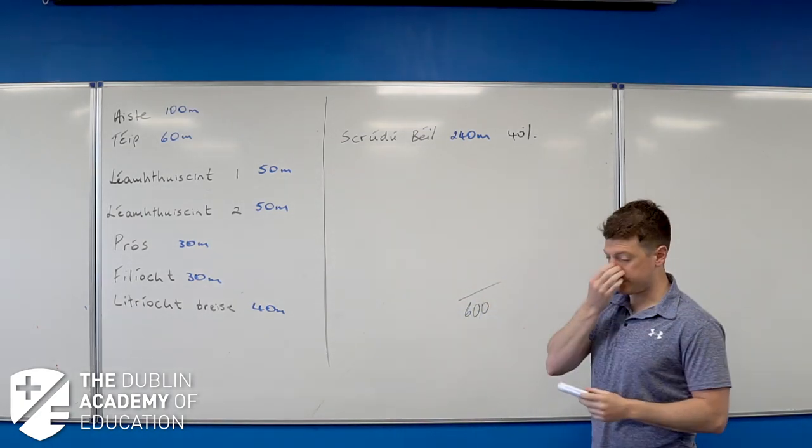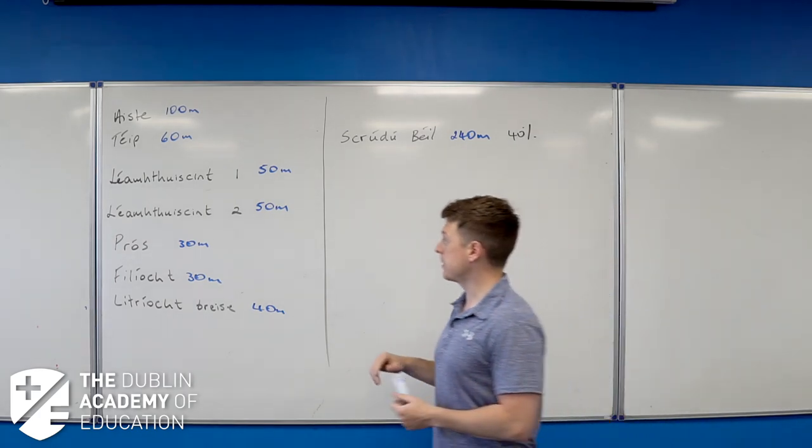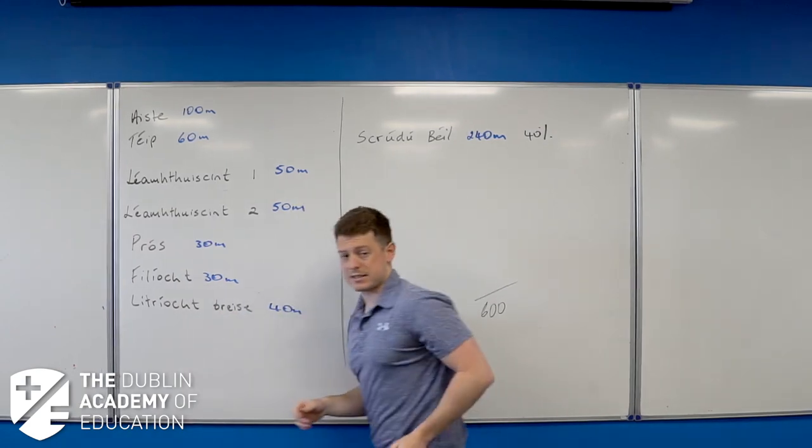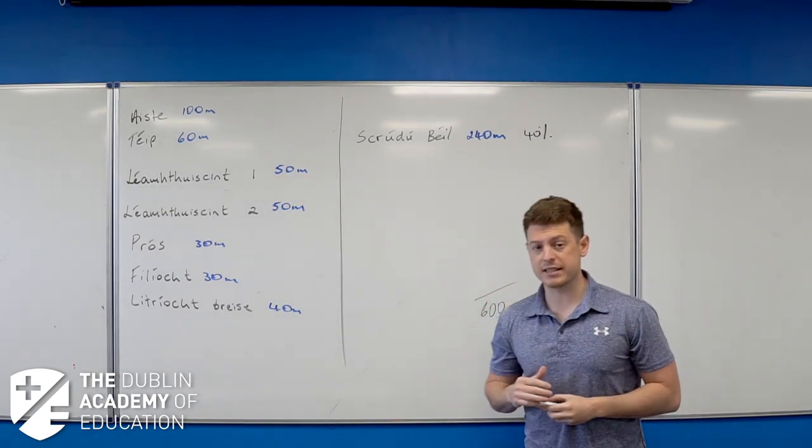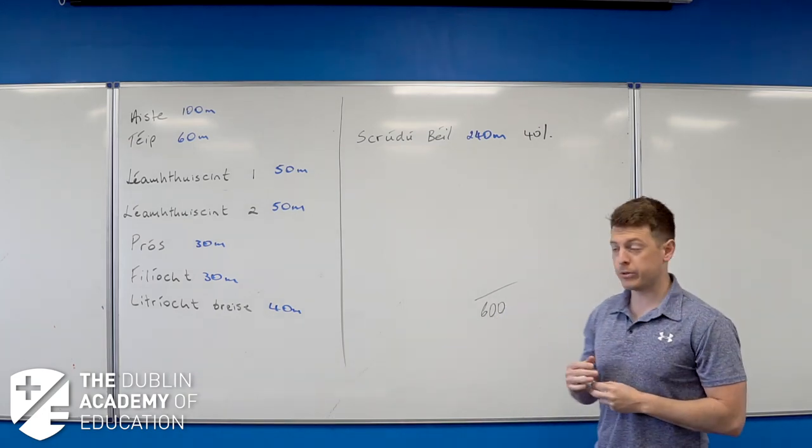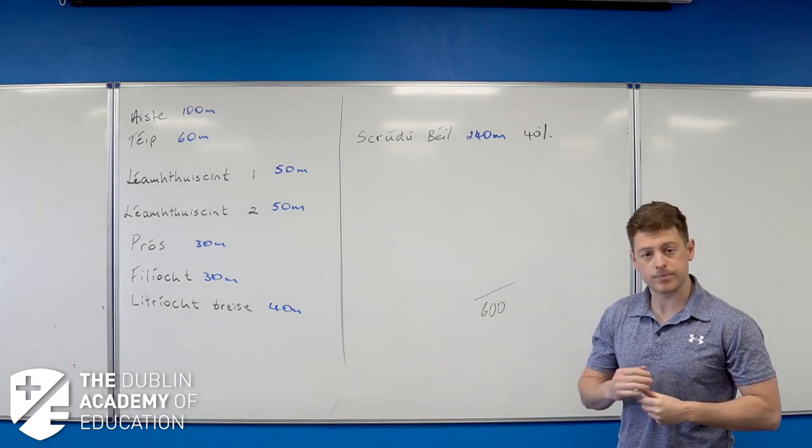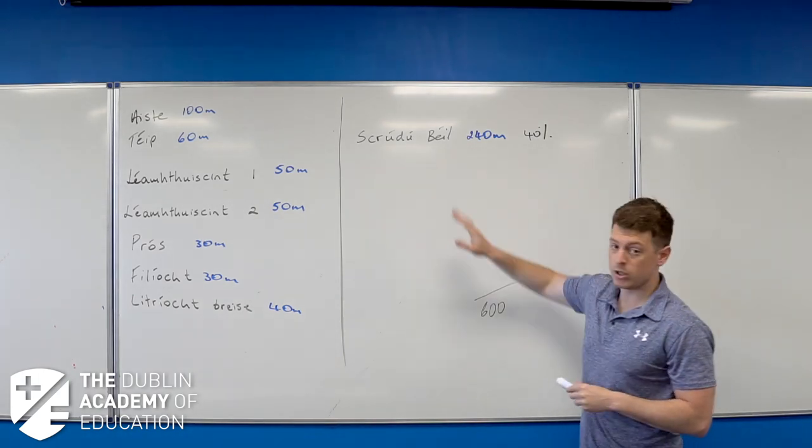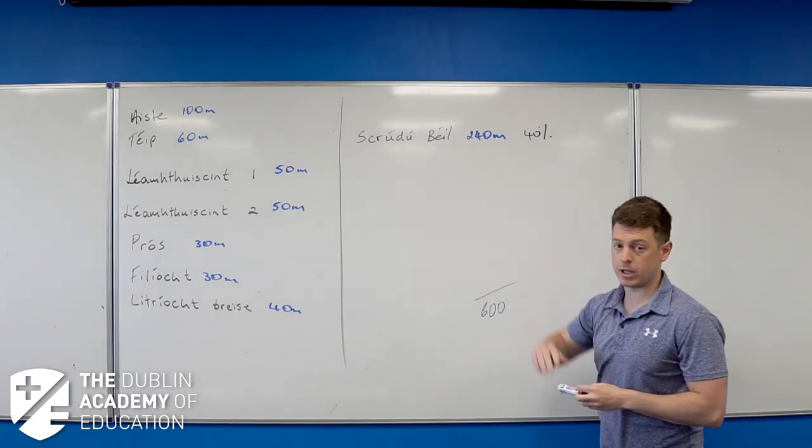So 240 marks is 40% of the overall grade. You'll do that exam end of March, start of April. So you'll have 40% of Irish done. Take into account the tape is worth 60 marks, that's 10%. So between the listening and the spoken skills of the exam is worth 50%. So the written stuff where you'll spend 95% of your time on in schools is only worth 50% of the marks. That's why when we're here in our day school, we have four classes of Irish a week. We spend two of them just doing the Irish oral.